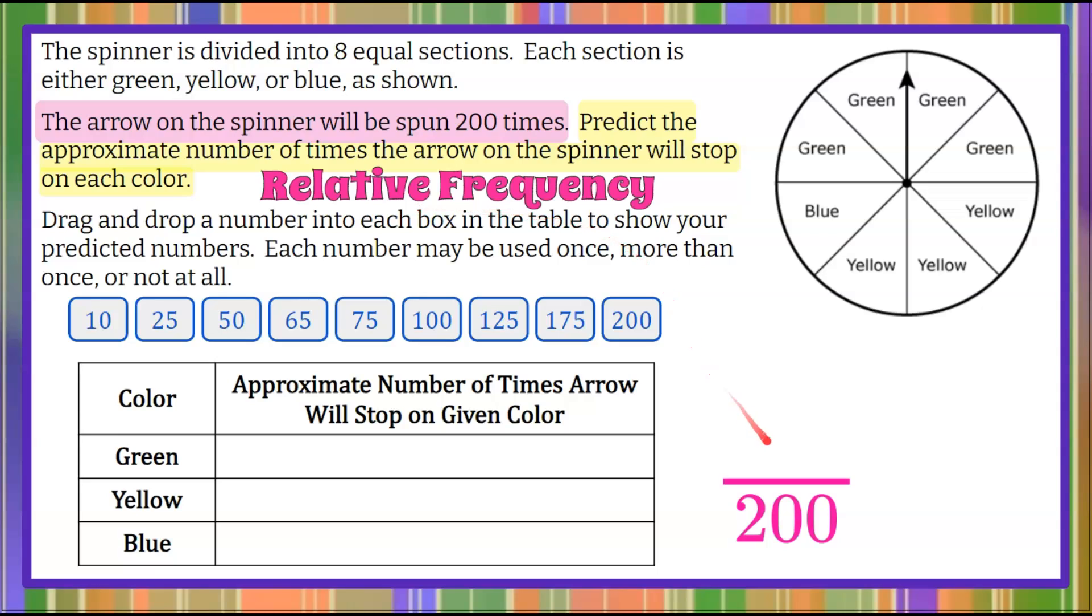Relative frequency is how many times it will happen out of 200. We're going to use what we know about green on the spinner. So we're going to identify our probability first, our ratio. So our desired outcome would be green.